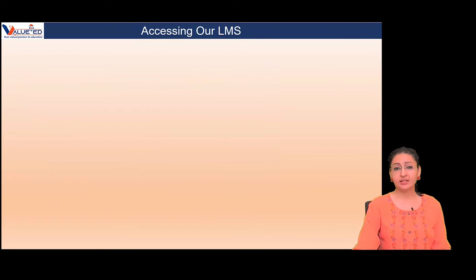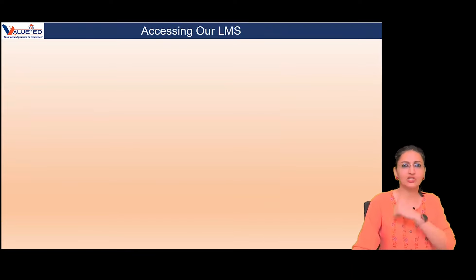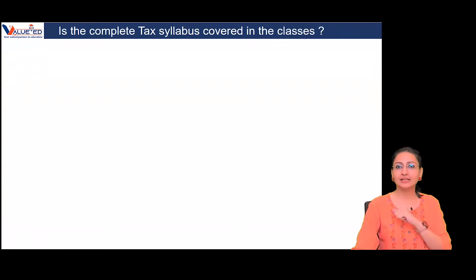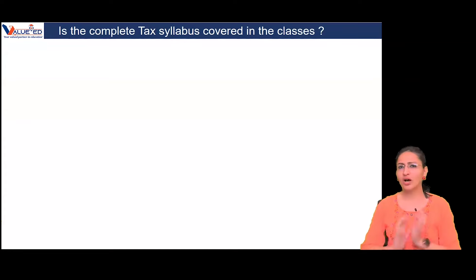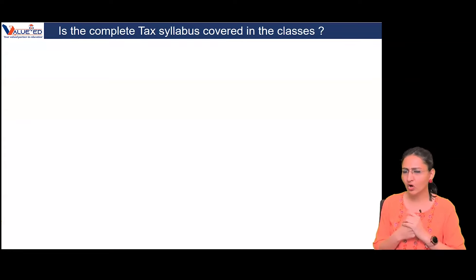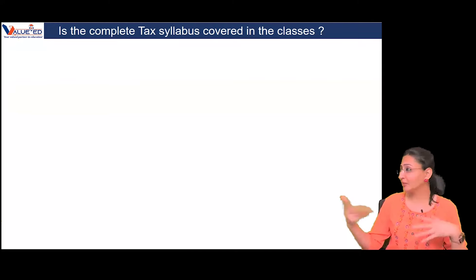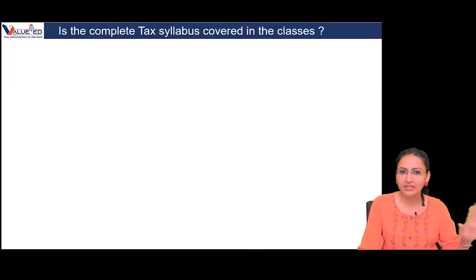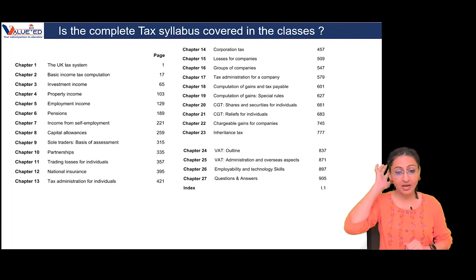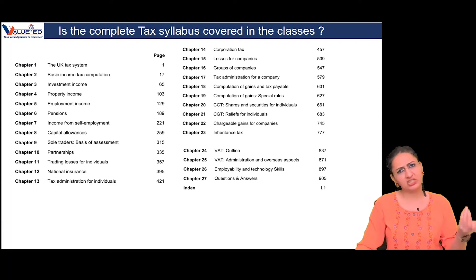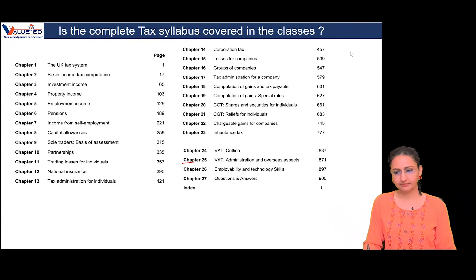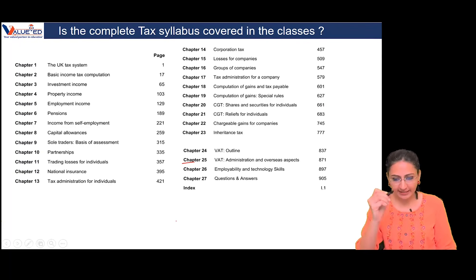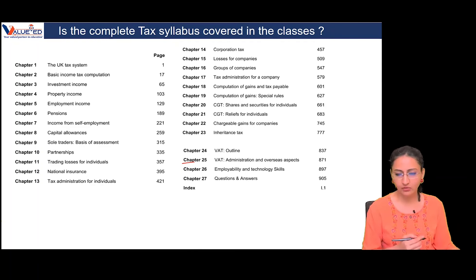Now let's look at the LMS — Learning Management System — where you'll get your classes. Go to our website www.valuead.in. Log in with your credentials. Go to 'My Courses' — all the courses you've enrolled in will show here. I'm added to every batch, so I see many; you'll see just one or two. Take a photo of the full syllabus — all 25 chapters — so we can verify that all 25 chapters are on LMS.